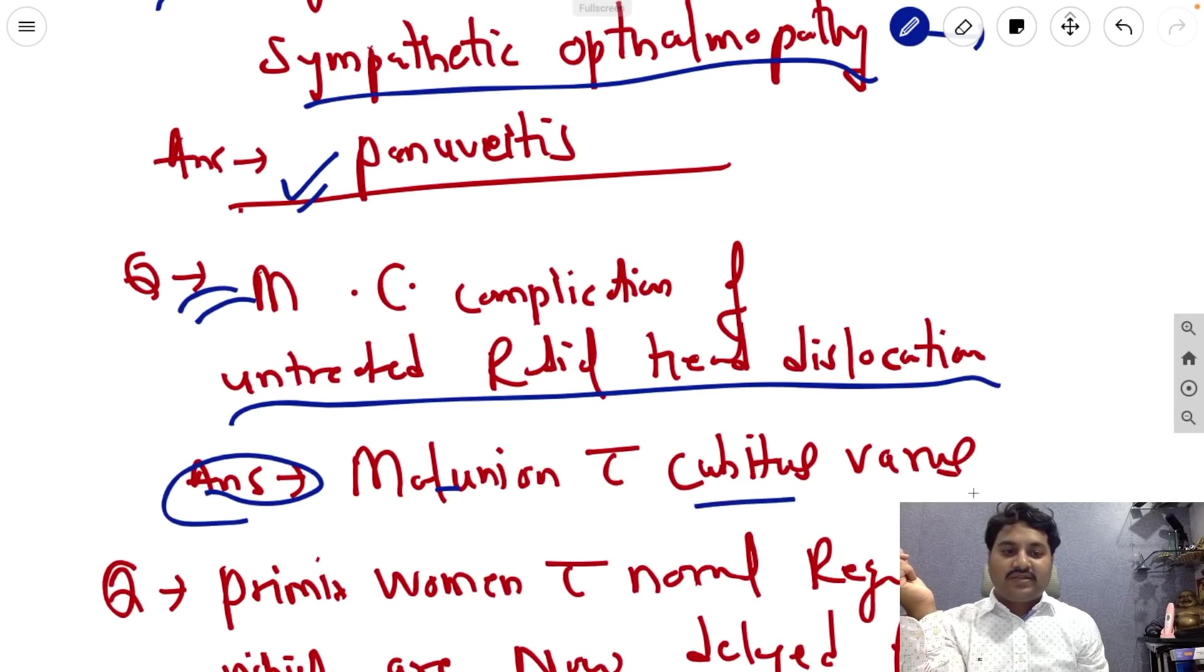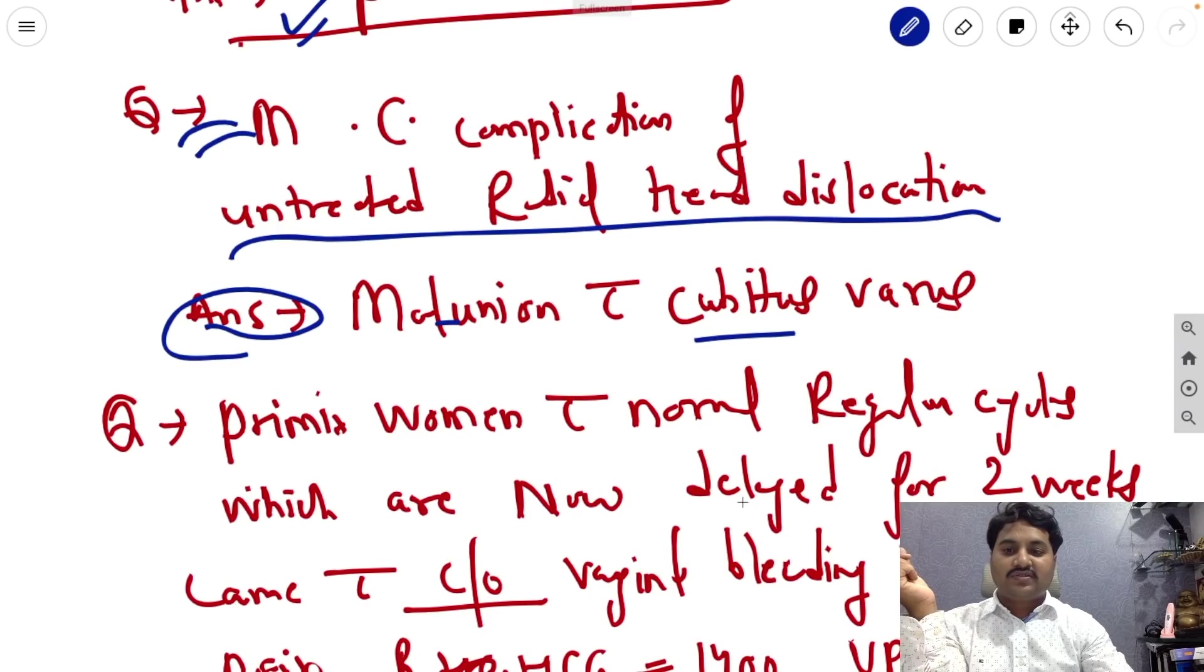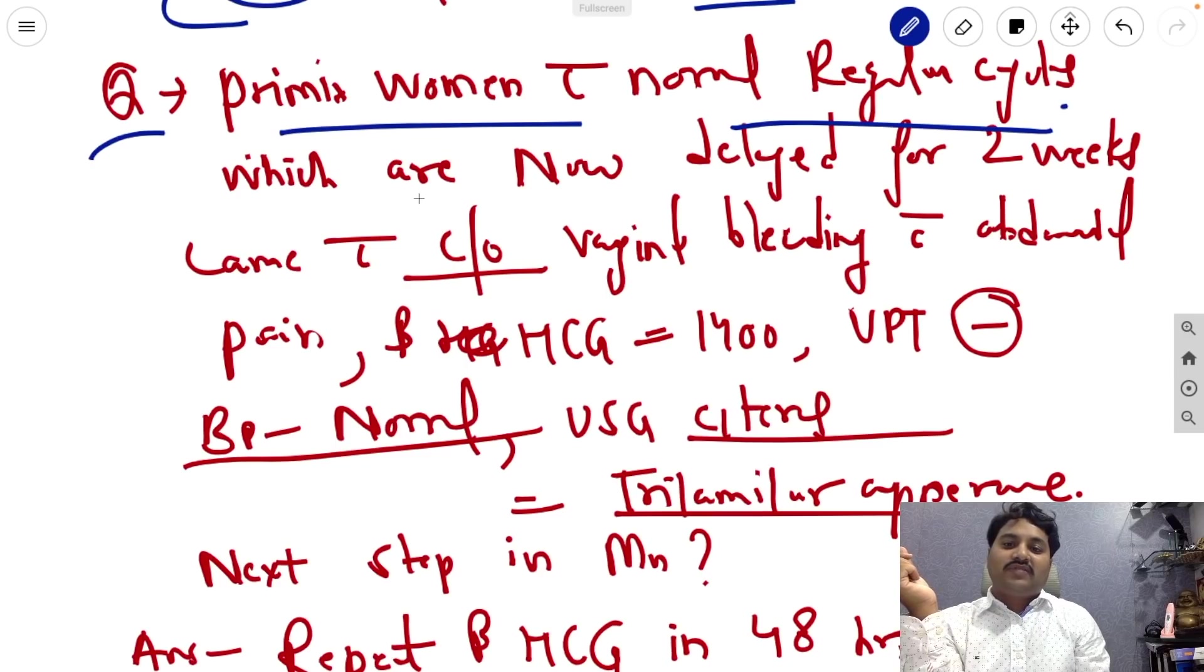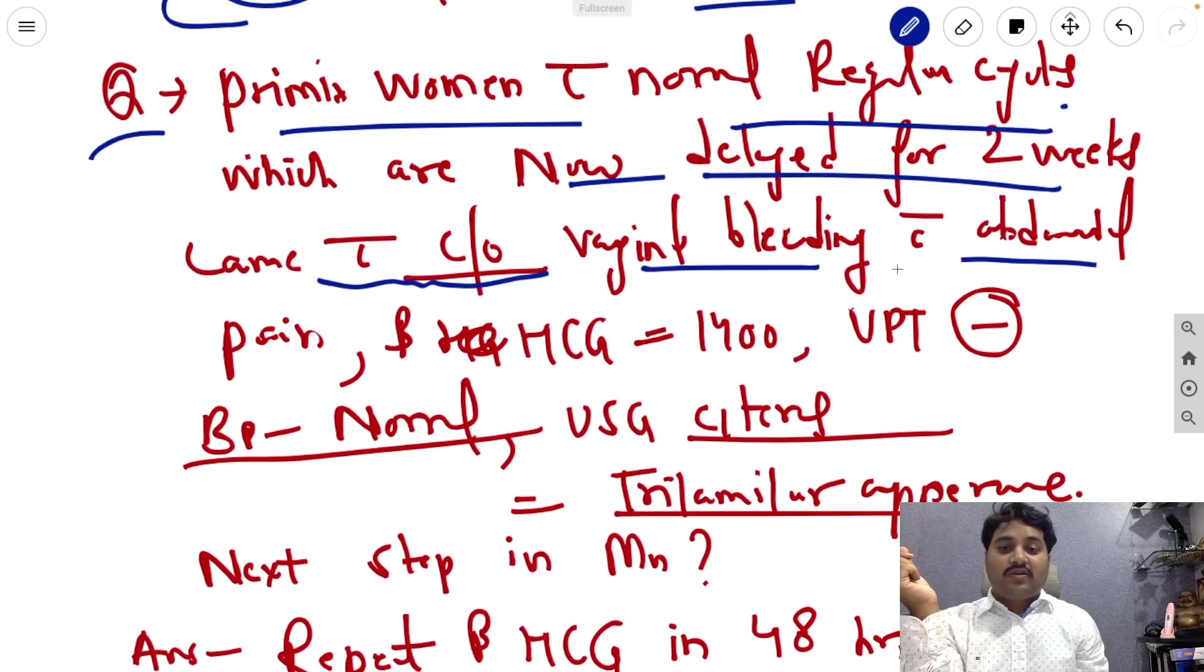Next question, primigravida woman with normal regular cycles, mind it, with normal regular cycles, now delayed for two weeks, came with complaints of vaginal bleeding with abdominal pain. The beta hCG is 1400, UPT is negative, BP is normal.